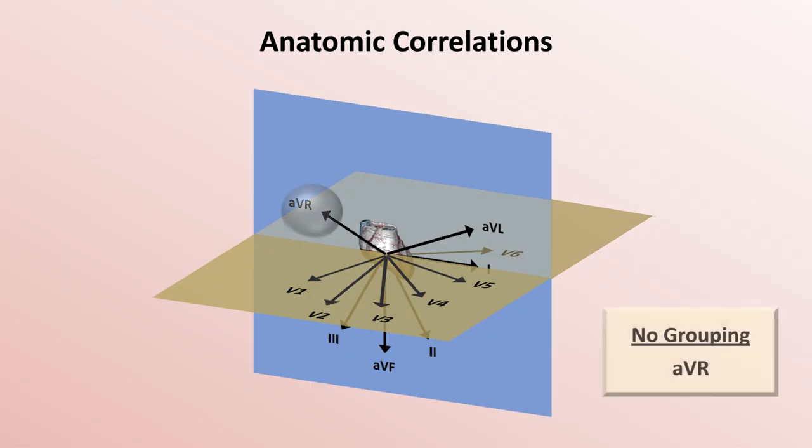Finally, as you can see, AVR is sort of the odd one out with no other leads in a similar direction and thus it has no group assignment.